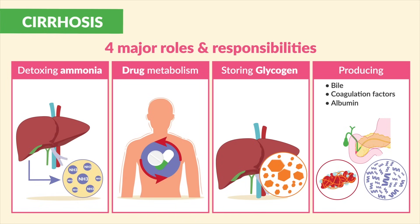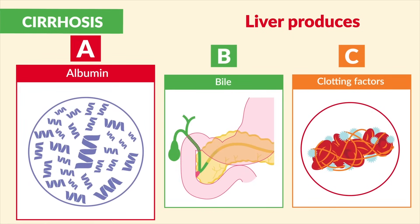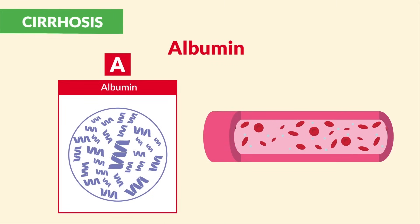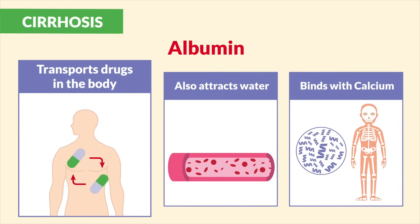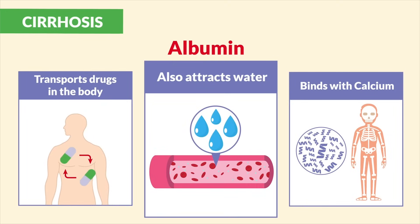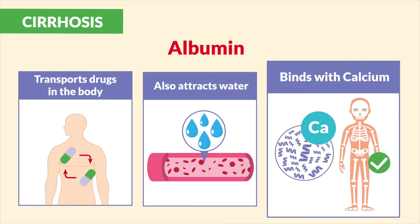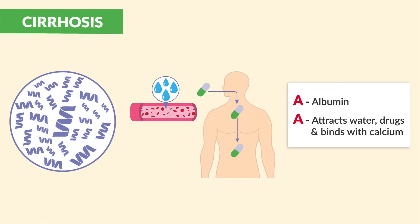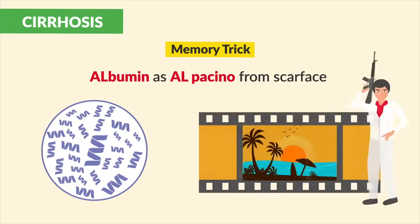Let's break this down using the mnemonic ABC-A: A for albumin, B for bile, and C for clotting factors. Albumin is a protein inside the blood that does three things: it transports drugs inside the body, attracts water to keep it inside the vascular space, and binds with calcium to make bones strong. A memory trick is to think of albumin as Al Pacino from the movie Scarface — for scar-rosis.